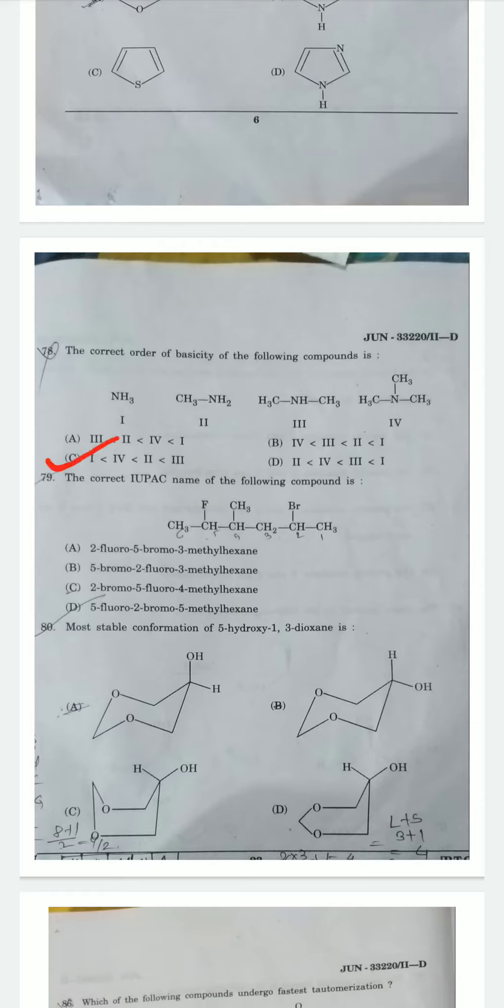Question 7: The correct IUPAC name of the following compound. For IUPAC naming, first rule is to select the longest continuous chain - we have six carbon atoms, therefore hexane. Branching occurs at the second carbon with fluorine and bromine. Alphabetically, fluorine comes first, then bromine. Option C is correct: 2-bromo-5-fluoro-4-methylhexane.